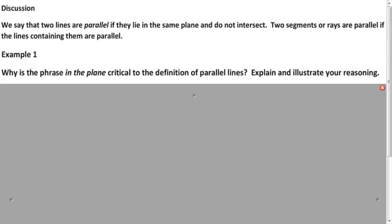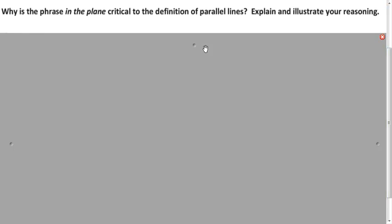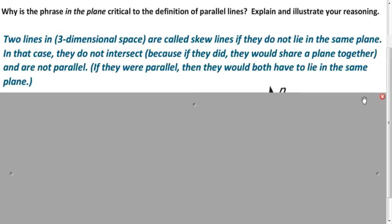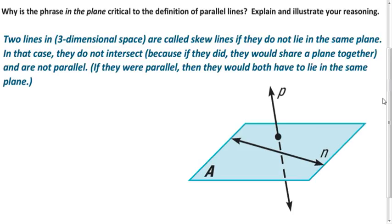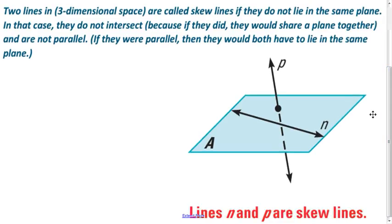When you think of a definition for parallel, I'm sure you think of two lines that don't intersect. But there's more to that definition — they also have to be on the same plane. Think in three dimensions. Lines that don't intersect but are not on the same plane are called skew lines. Lines P and N are not on the same plane and don't intersect, so they're not parallel — those are skew lines. That's why that part of the definition is very important.